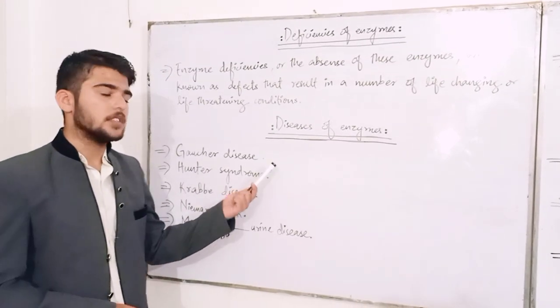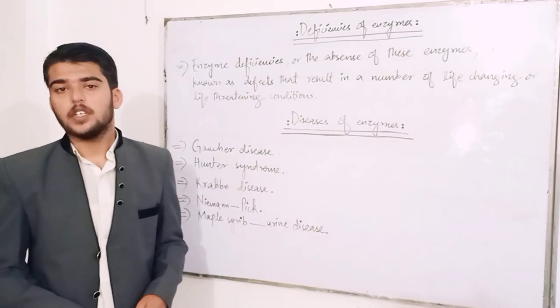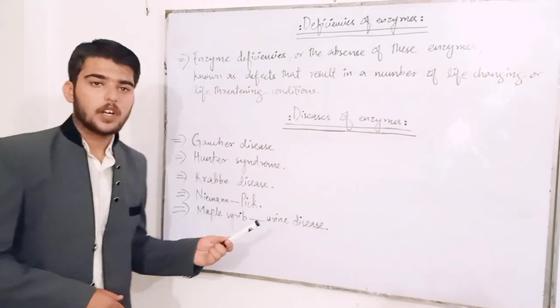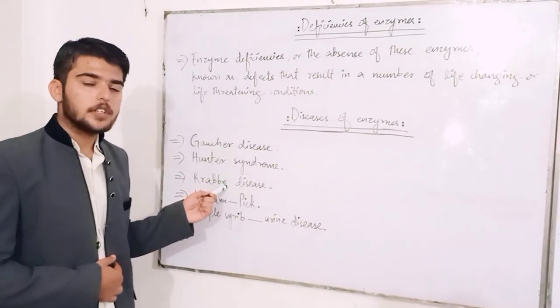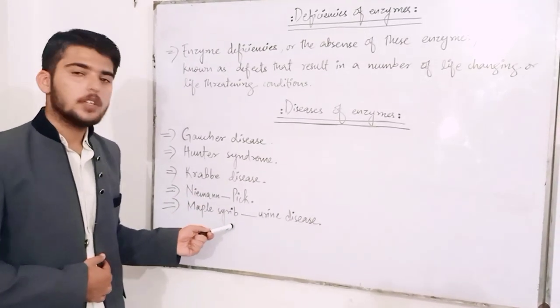Diseases of enzymes. If we have a deficiency of an enzyme, it causes diseases. For example: Gaucher disease, Hunter syndrome, Krebs disease, Niemann-Pick, Maple syrup urine disease.